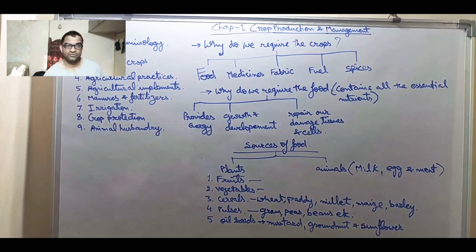What kind of food we are getting from the crops? Like vegetables, fruits, etc. In the case of medicines, all the Ayurvedic medicines like Ashwagandha and many more Ayurvedic medicines we are getting from the plants.